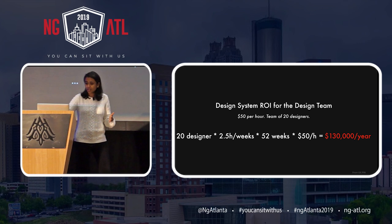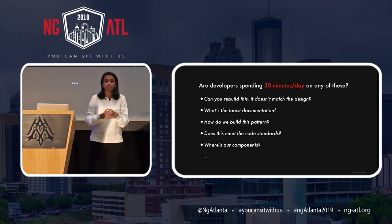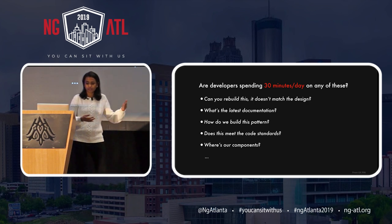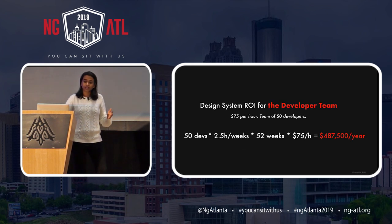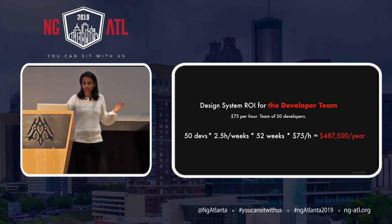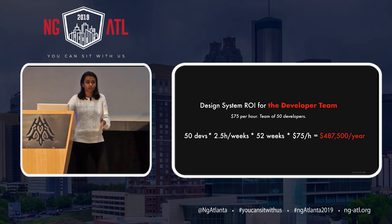Similarly, for a developer, if a developer is spending 30 minutes a day thinking about things like: can you rebuild this? Does it match the design? Where's the latest documentation? Where are our different components? Does this meet the code standards? A very similar calculation — $75 per hour, 50 developers in your company, spending 2.5 hours per week through 52 weeks at $75 per hour — that's $487,500 per year that you can save if you have a DLS in place.